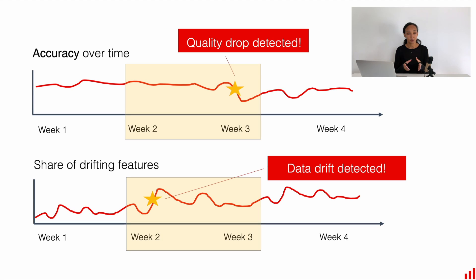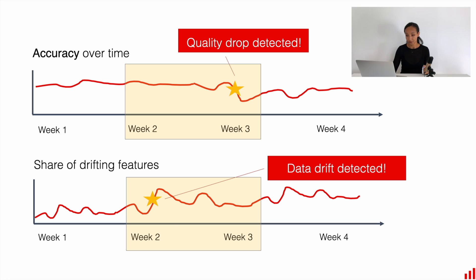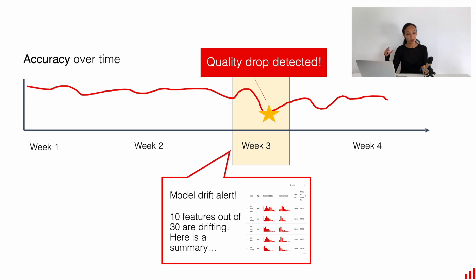So how can we use the information about prediction drift and feature drift? Imagine we detected a model quality drop on the third week of production. If we also measured feature drift, we can calculate the share of drifted features — it's much easier to track than individual feature drifts, especially when you have a lot of features. If we see that a lot of features are drifting, that's another signal of potential model quality drop, and we can start analysis earlier to prevent it. The idea is to measure this as a proxy metric for early monitoring of potential model quality issues.